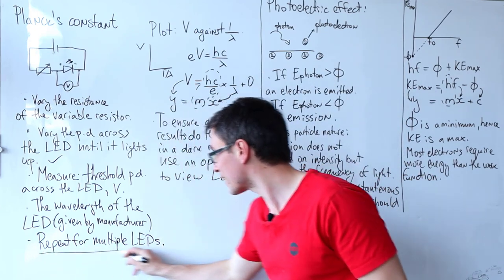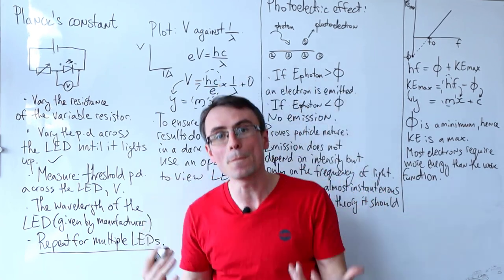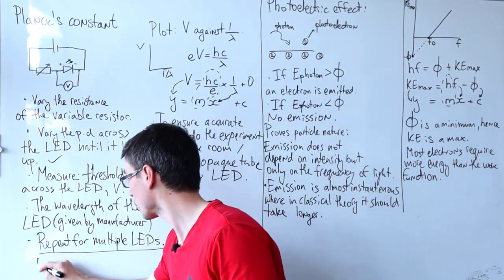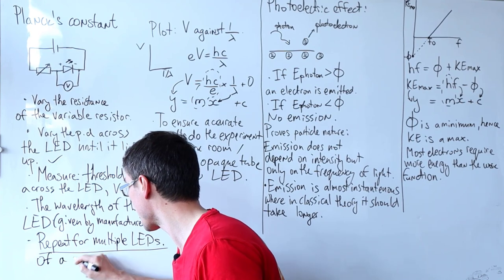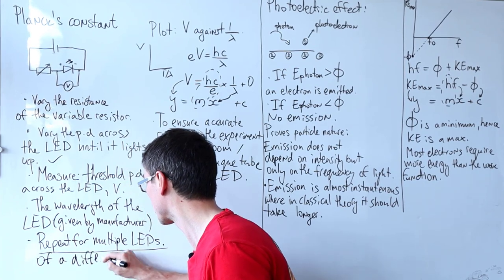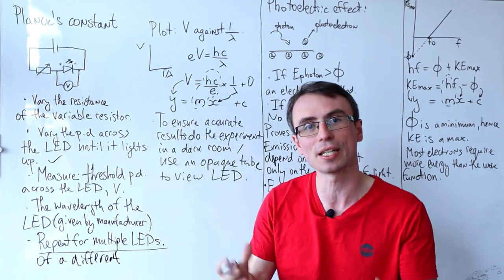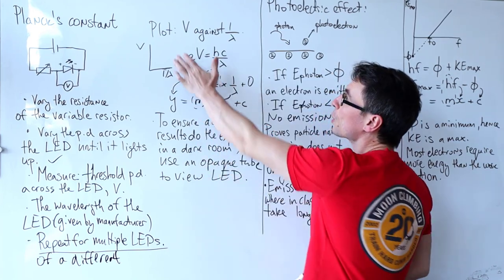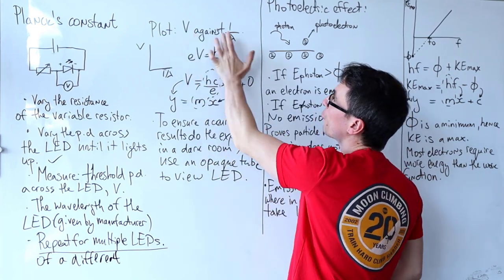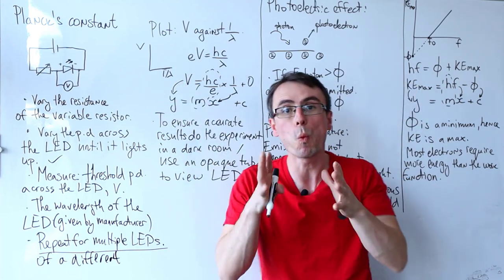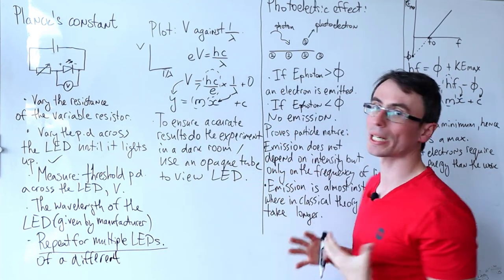Then we're going to repeat this experiment for multiple LEDs of a different color or different wavelength. Then we're going to plot a graph of the voltage against one over lambda, and this is really important.